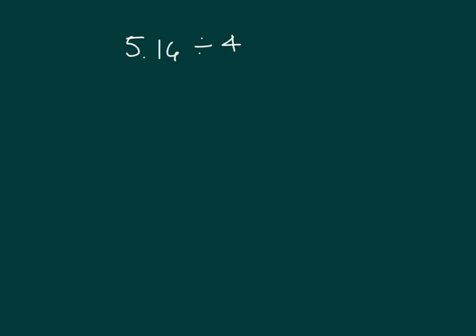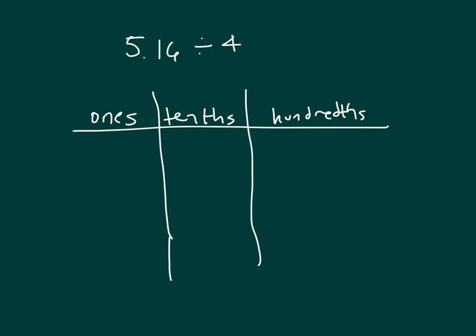Here's my next problem. Make a place value chart: ones, tenths, and hundredths. Model my number: 5 ones, 1 tenth, 6 hundredths. And this time I'm dividing by 4, so I need to have 4 groups.